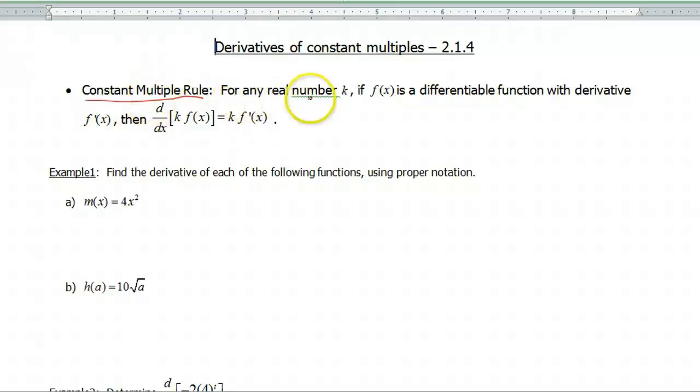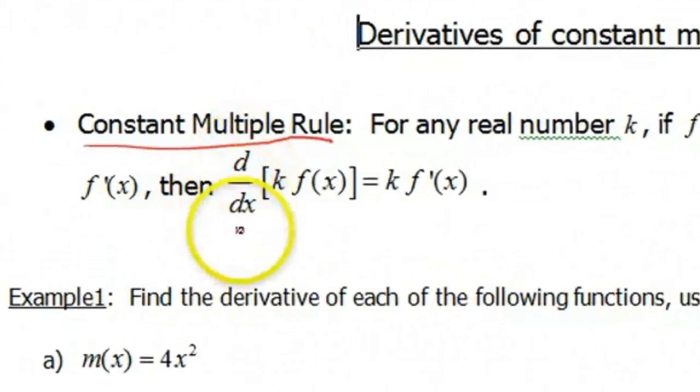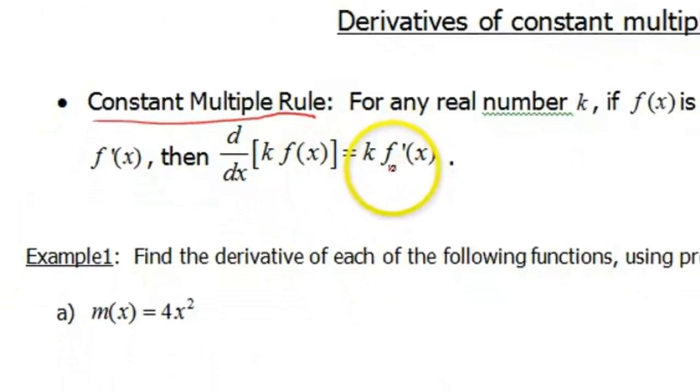So this says for any real number k, if f of x is a differentiable function, so that means you can find the derivative of it, and it has a derivative that's defined to be f prime of x, then if we want to do the derivative with respect to x of k times f of x, that's simply k times the derivative, f prime of x.